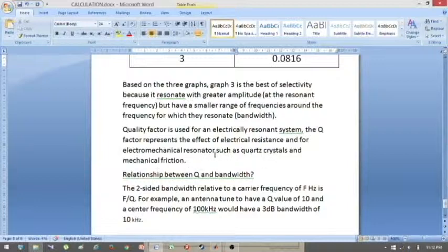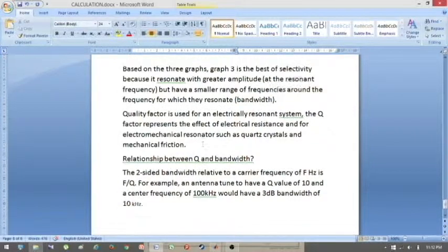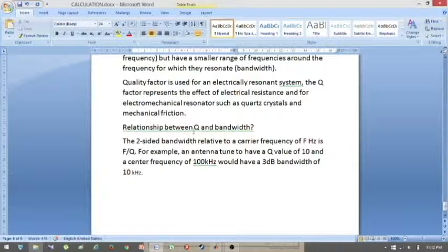What is the relationship between Q and bandwidth? The two-sided bandwidth relative to a carrier frequency of F Hz is F over Q. For example, an antenna tuned to have a Q value of 10 and a center frequency of 100 kHz would have a 3 dB bandwidth of 10 kHz.